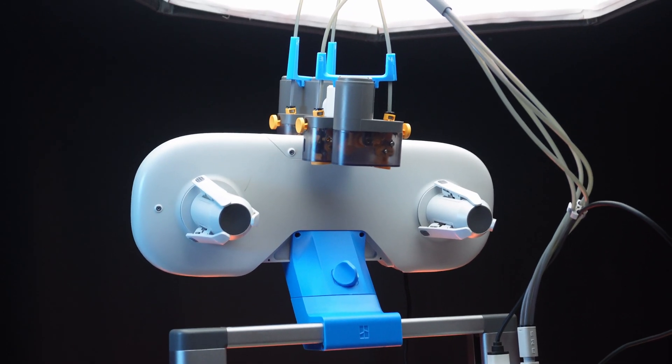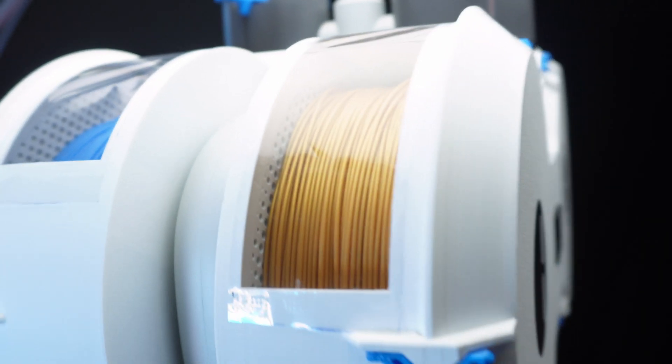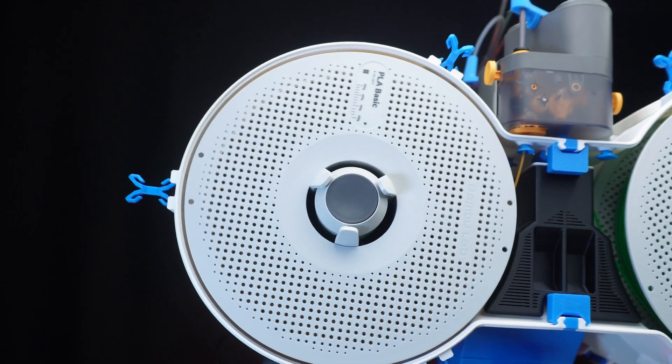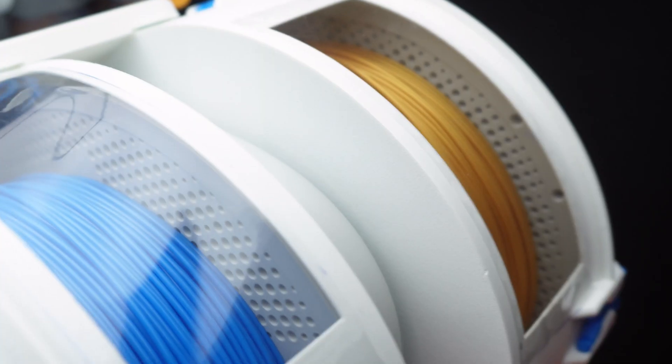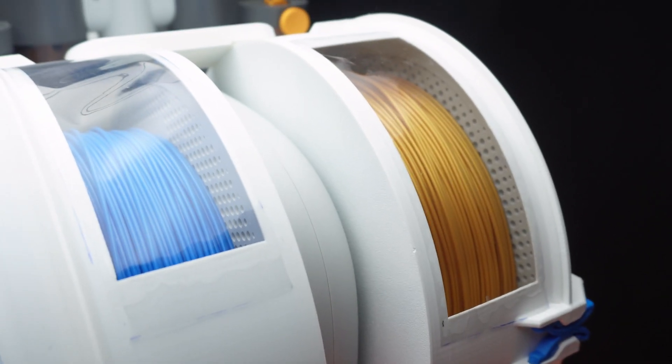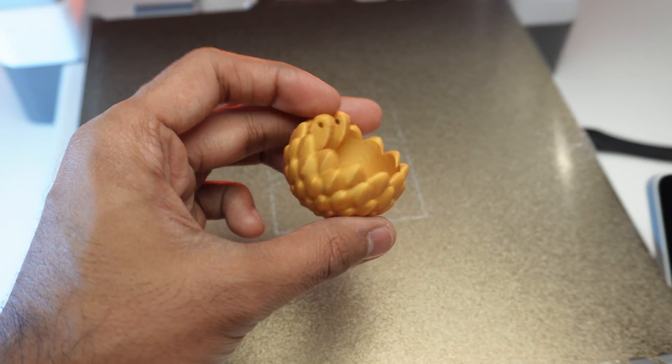Today, we are taking the AMS light to the next level with the ultimate filament spool enclosure. This enclosure not only keeps our filament organized but also protects them from dust and moisture, ensuring flawless prints every time.